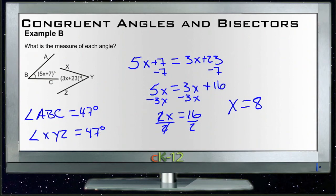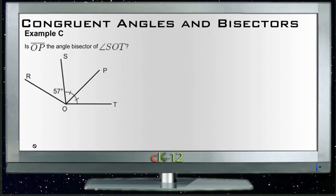Alright, and then finally Example C: Is OP the angle bisector of SOT? So is this line right here the bisector of this angle from S to O to T? And we could tell it was the bisector if there's the same number of degrees on each side. And since this angle right here and this angle right here are each marked with a single hash mark...